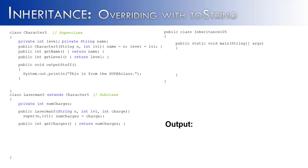So let's create an object of the Character5 class and see what happens when we call the method outputStuff. We create an object called C, then call the method outputStuff. When it's called, it's going to output 'This is from the super class,' just as we would expect.